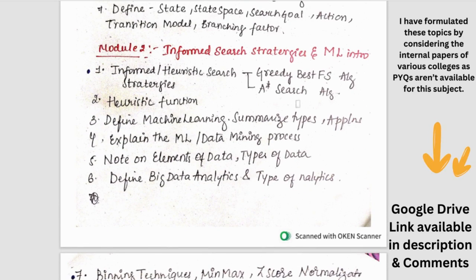Moving on to the second module. First part we have is the AI part and the second part is ML part. So in AI part we have informed or heuristic search strategies - in that greedy best first search and then A star search. So out of these two, one would be definitely asked. And along with the algorithm there will be a problem also.